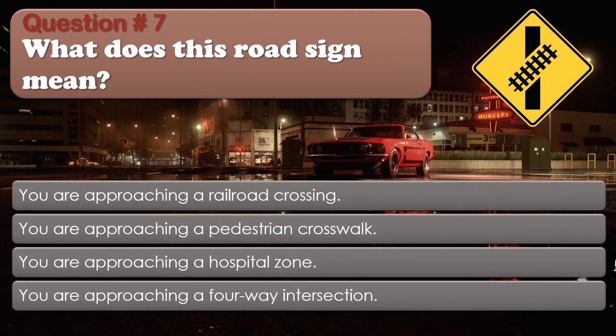Question number 7: What does this road sign mean? Options: You are approaching a railroad crossing. You are approaching a pedestrian crosswalk. You are approaching a hospital zone. You are approaching a four-way intersection. The correct answer is You are approaching a railroad crossing.